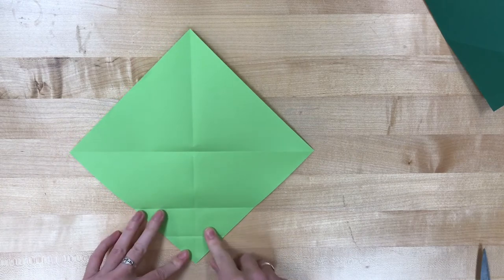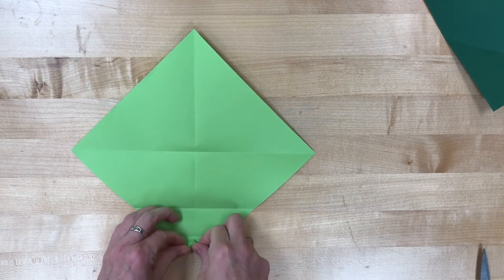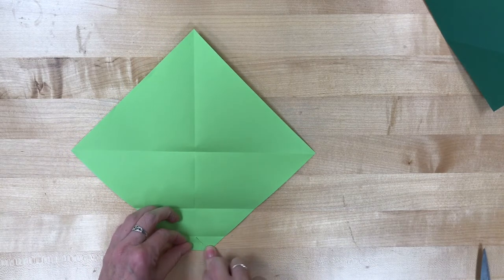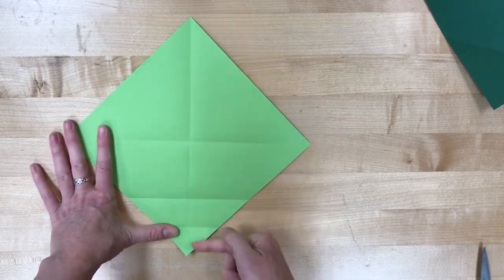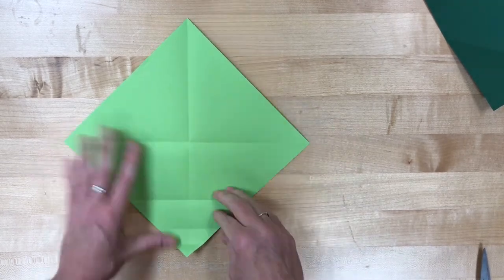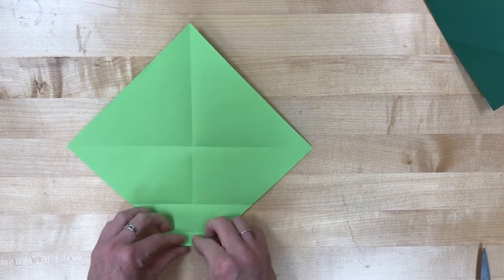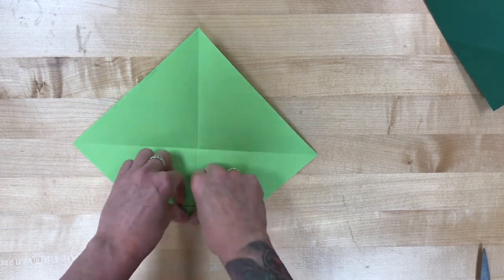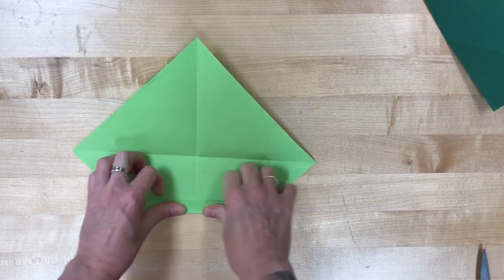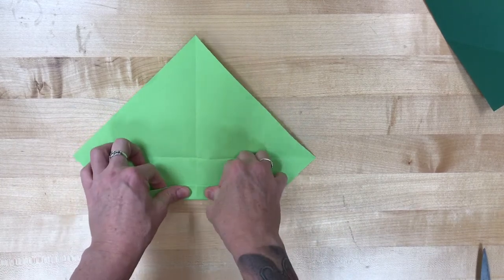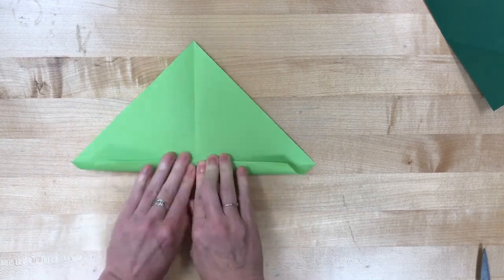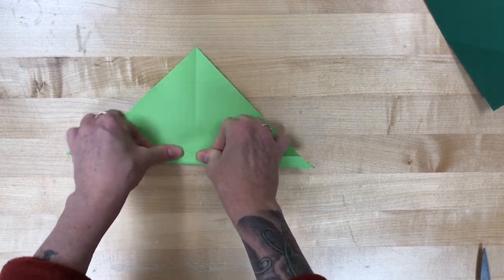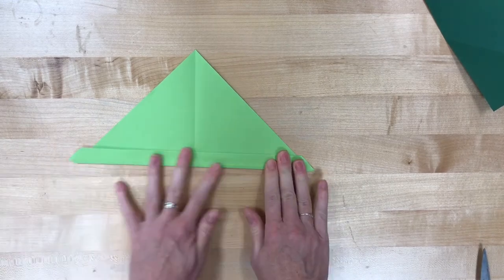Then I'm going to do it again. Bring that bottom point up to the line that we just made. Now I'm basically going to wrap this up about eight times. And each time, I'm going to make sure it lays nice and flat and just keep rolling it up. It won't be on the lines that you folded exactly, but it'll be close. And you want to do that eight times.